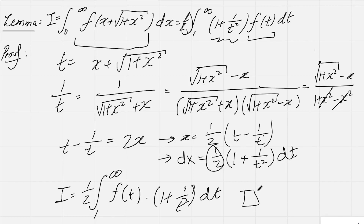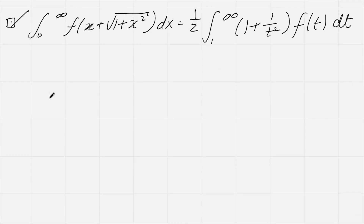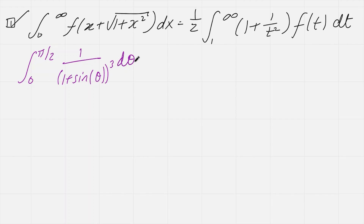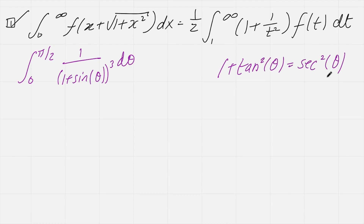Now let's use this lemma to evaluate the original integral. Our integrand is trigonometric, but we don't quite have limits of 0 to infinity yet. Thinking about trigonometric functions and Pythagorean identities, we recall that 1 + tan²θ = sec²θ. We've got a '1 + something squared' — that looks like the lemma structure. We know tan and sec have the nice property that their derivatives relate to one another.